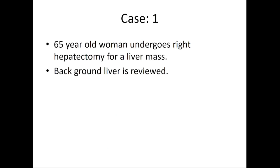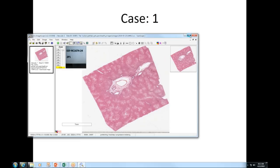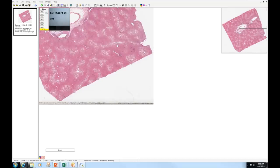Let's begin with a case. This will be a 65-year-old woman who undergoes a right hepatectomy for a liver mass. I will not show you the liver mass, but we will look at the background liver. What we are currently seeing here is from a liver wedge resection for a mass — this is the background liver. At low power, we can see that we do have portal triads, and we'll go on higher power to look at that.